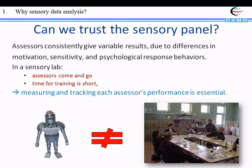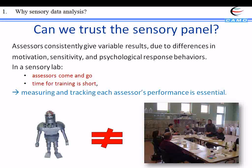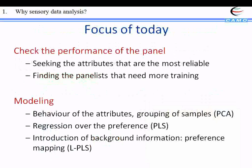In sensory analysis, there is a big problem with the data. When we are using panelist data, we are using measurements made by human beings, so there may be variation due to different factors — for example, the sensitivity or the psychological state of the panelist on the day of measurement. The data from the panelist has to be tested to see if the assessors are giving normal results, or if their results are biased by something. What we will see today is how to check the performance of the panel, seeking the attributes that are most reliable, and seeing if some panelists need more training than others.